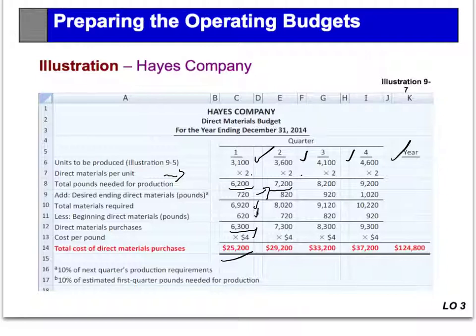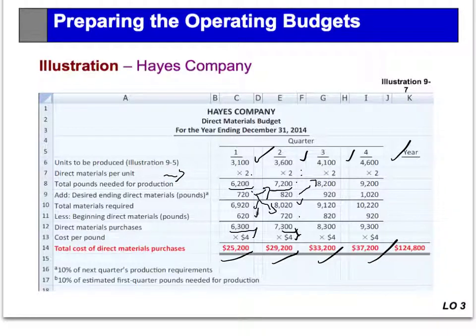For quarter two, we need 3,600 units to be produced, requiring two pounds of raw material per unit — which means I need 7,200 pounds. I also have to end up with 10% of what I need next quarter, so in total I need 8,020. But I don't have to purchase 8,020 because I already have 720 on hand — ending inventory last quarter is beginning inventory this quarter. Therefore, I have to purchase 7,300 pounds times $4, and in that way I develop my direct material purchasing budget.